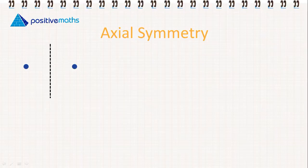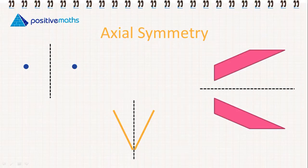We can also have axial symmetry just with one point. Again, we can have it with lines, or we can have it with a shape.